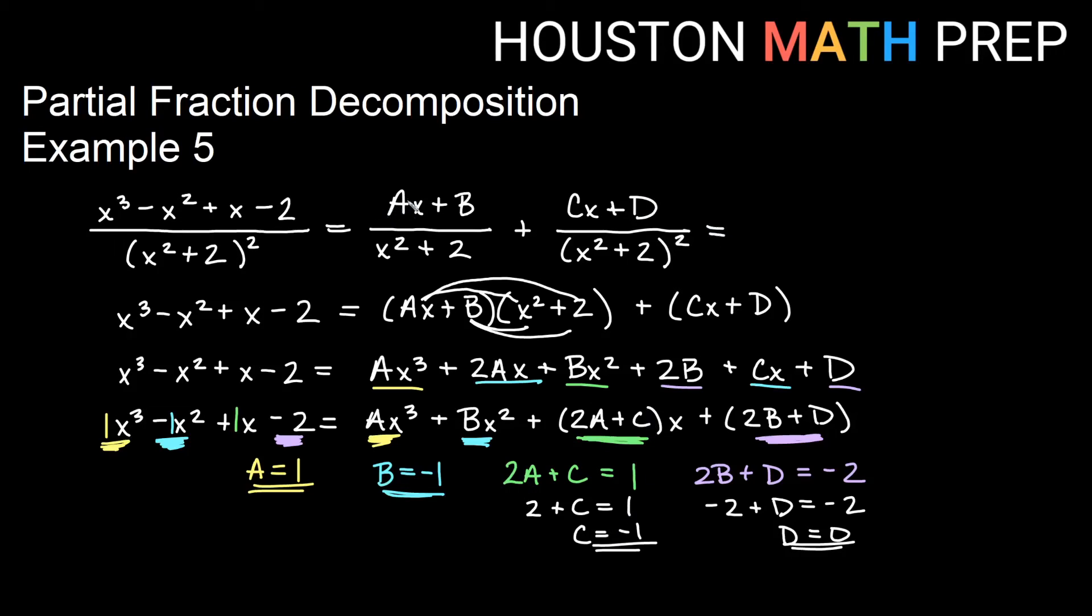We have ax plus b on the top here. And that's a 1 and a negative 1. So I have 1x minus 1. That's our ax plus b term over x squared plus 2 plus. Now we'll do cx plus d. C was negative 1. So I would rather write minus x, and since d is 0, there's no constant on the top there either, over x squared plus 2 all squared.